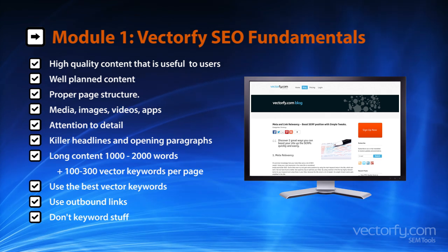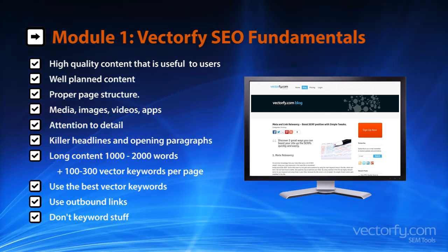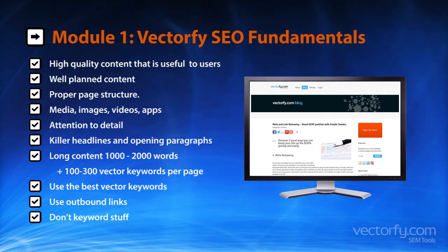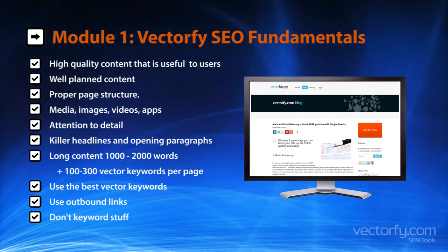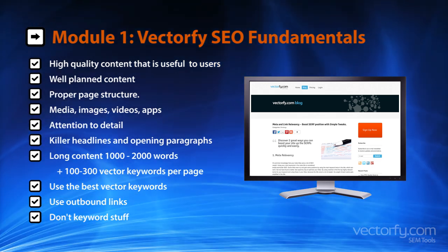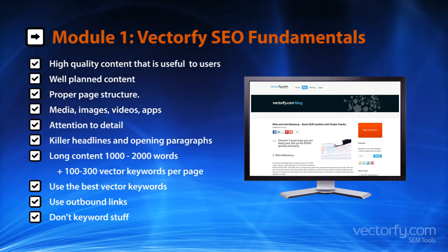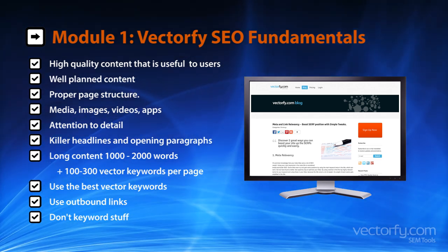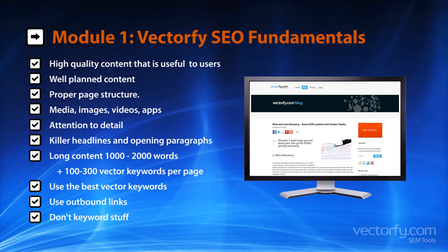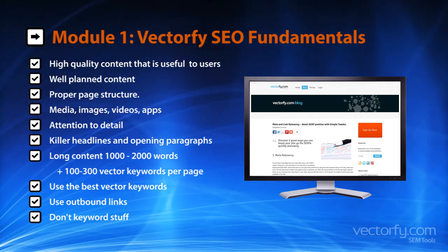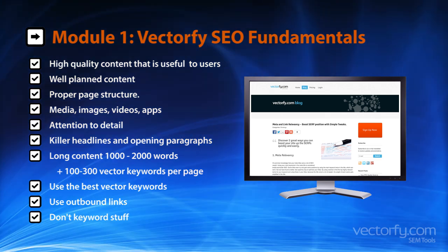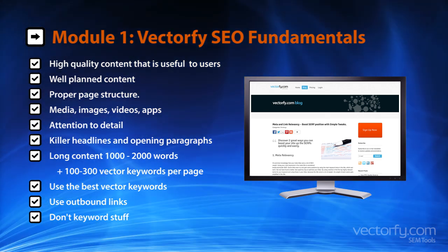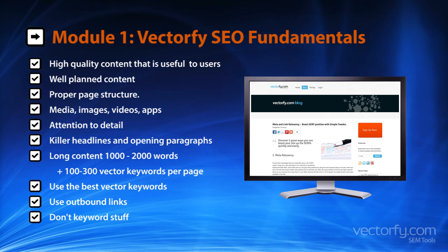10. Don't keyword stuff. It's fine to use your keywords in a few of the headings and bolded once or twice, but don't just stuff it everywhere — in every alt tag, comment, header, image name, and any other place you can force it. Use it naturally. Used with all other relevant vector keywords, you don't need to force it. Doing so will have negative effects. Keep everything natural.